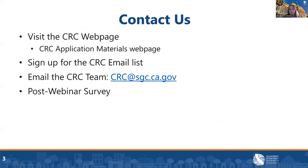We also wanted to share ways you can connect with us and stay informed about the CRC program. You can visit our webpage — in particular the CRC application materials webpage — to find guidance documents and other application materials. We are experiencing slight delays in updating our webpage, so while the most accurate information will be represented there, the quickest way to receive updates is by signing up for our CRC email list, found in the video description. You can also email the team at crc.sgc.ca.gov. Response times are a little longer than average due to higher traffic, but we are actively working on getting back to all messages.